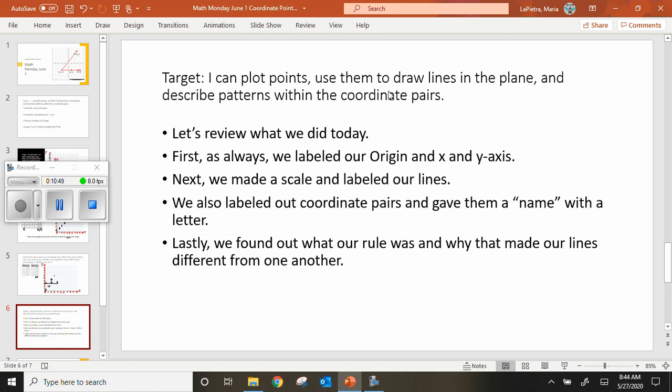Our target today: I can plot points, use them to draw lines in the plane, and describe patterns within the coordinate pairs. So, your points, you connect those points, like we did, to form a straight line. Let's review what we did today. First, as always, we labeled our origin, (0, 0), X comma Y, and X and Y axis. We're labeling all of those first.